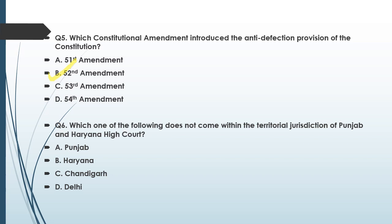Question number six: Which one of the following does not come within the territorial jurisdiction of Punjab and Haryana High Court? Option A: Punjab, option B: Haryana, option C: Chandigarh, option D: Delhi. Punjab and Haryana High Court is at Chandigarh and it has original as well as appellate and supervisory jurisdiction over matters pertaining to Punjab, Haryana and Chandigarh. So option D is the correct answer — Delhi does not come within its territorial jurisdiction; we have a separate Delhi High Court.